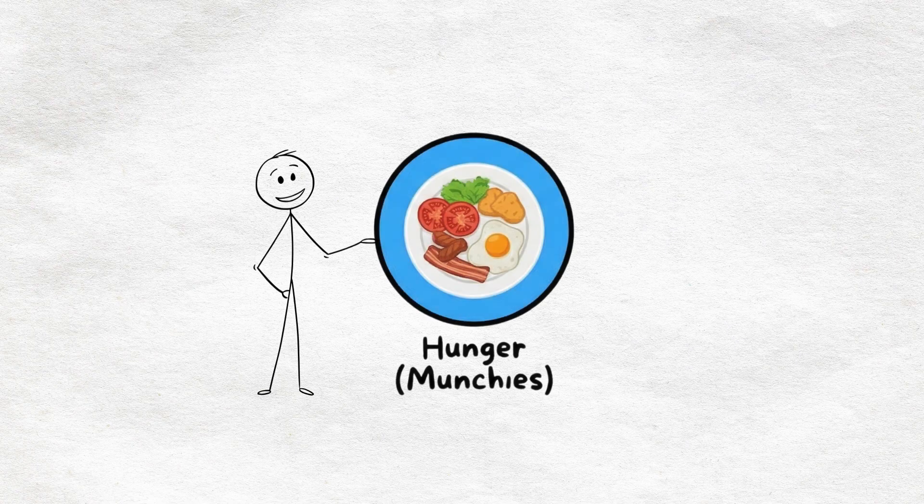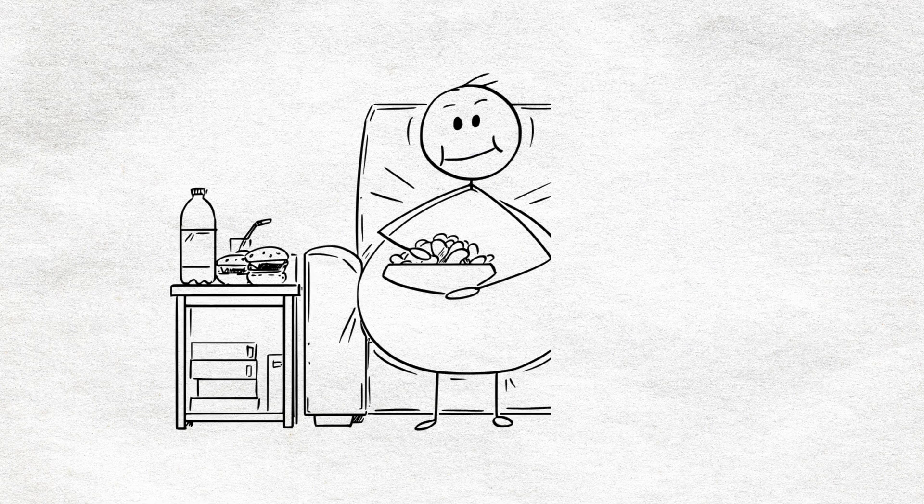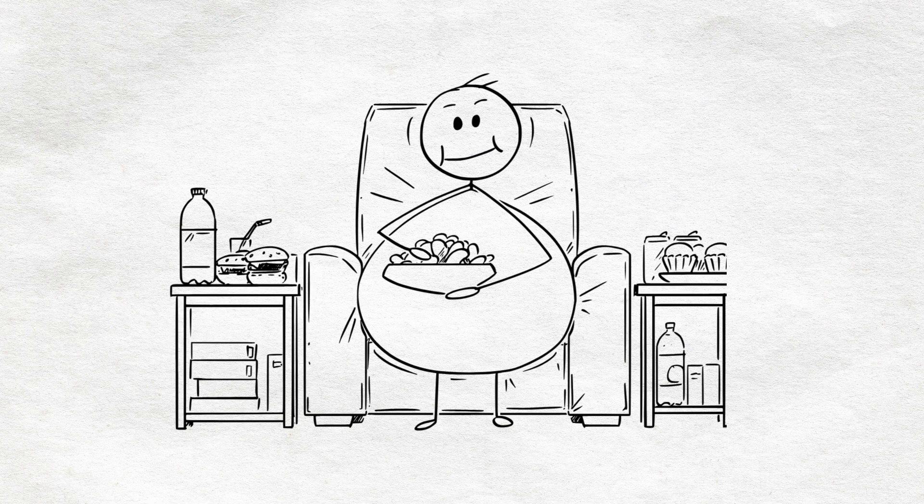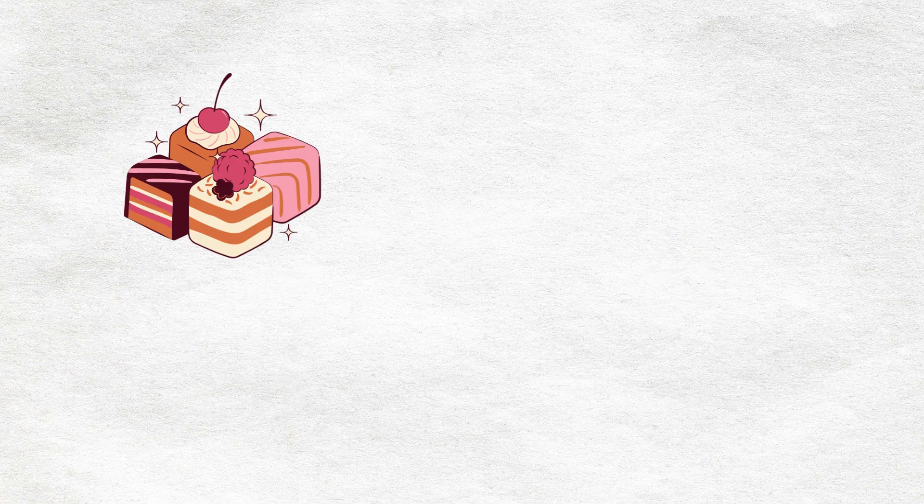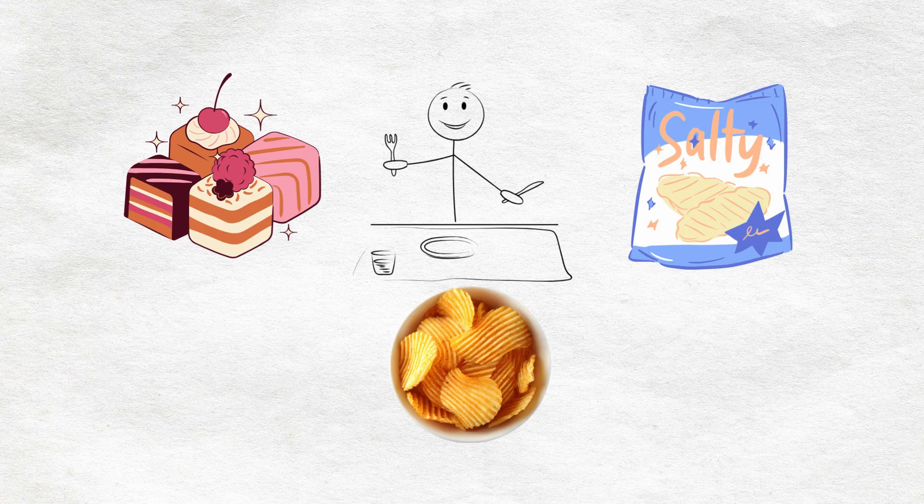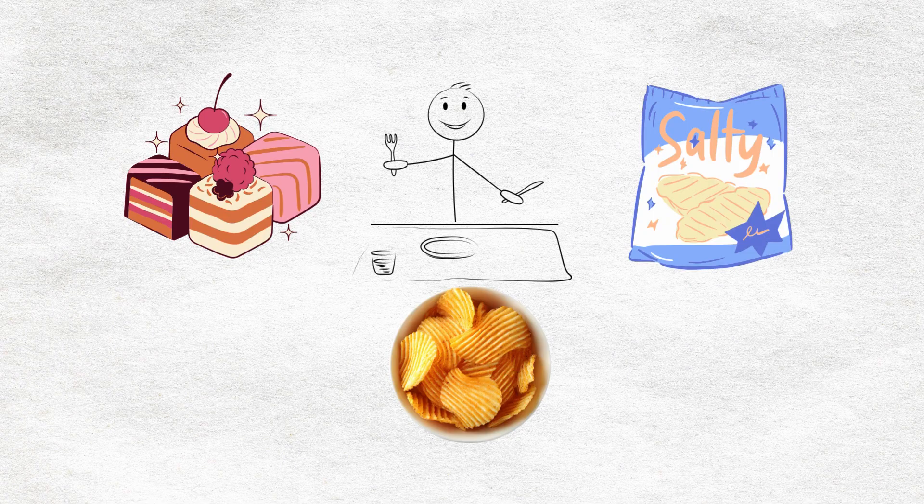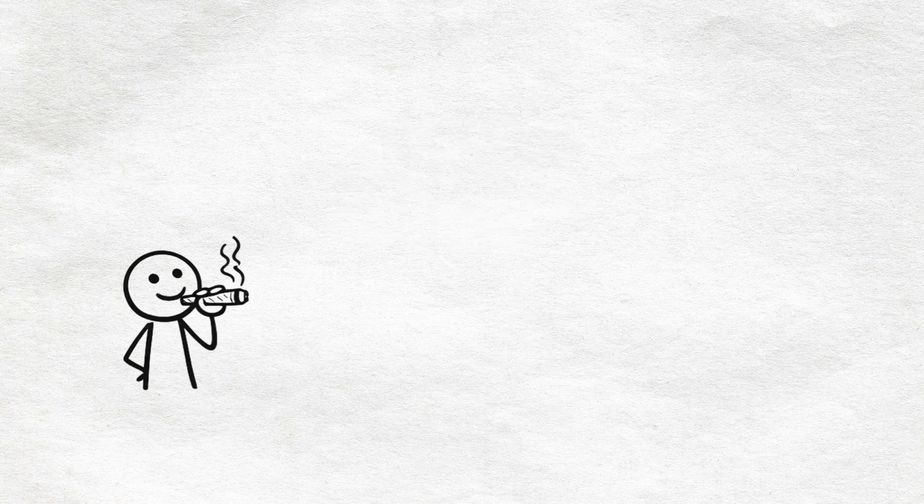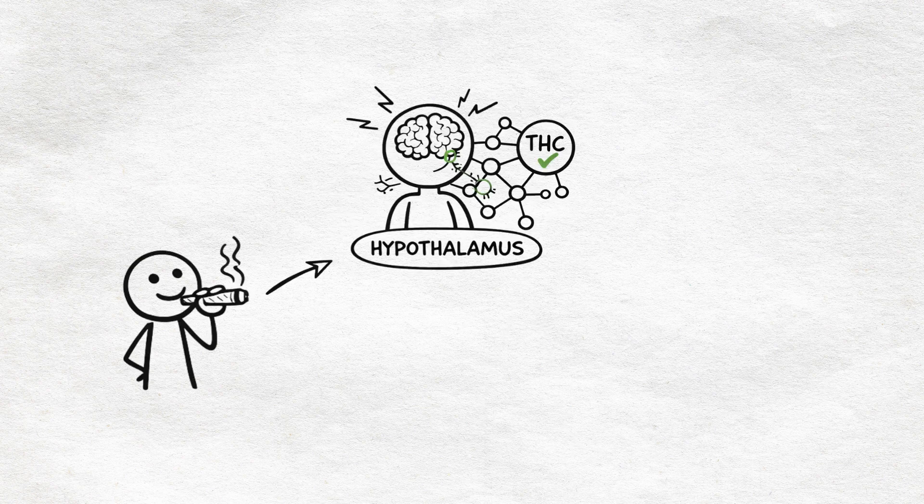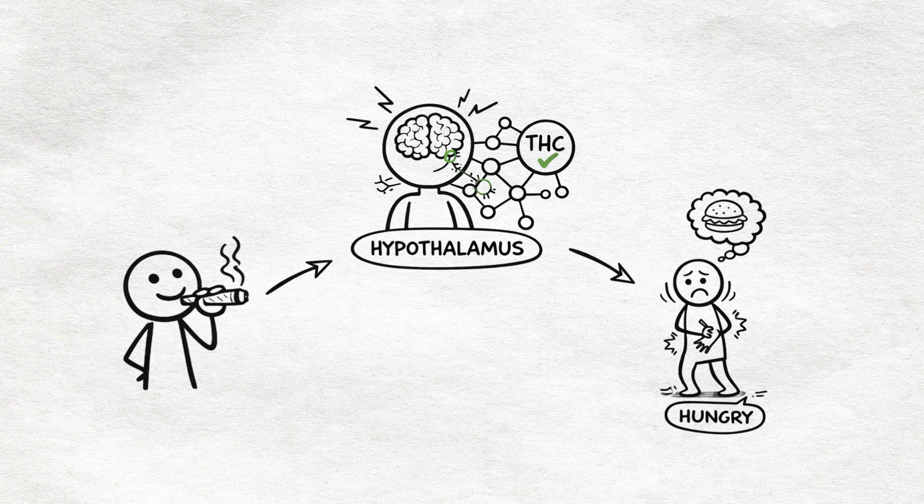Hunger, the munchies take over. Then comes one of the most famous effects: unstoppable hunger. The munchies. Suddenly food doesn't just sound good, it sounds necessary. Sweet, salty, crunchy, it doesn't matter. Everything tastes like it's the best thing you've ever eaten, and you physically cannot stop. This happens because THC hijacks your hypothalamus, the brain region controlling appetite, and tricks it into thinking you're starving.